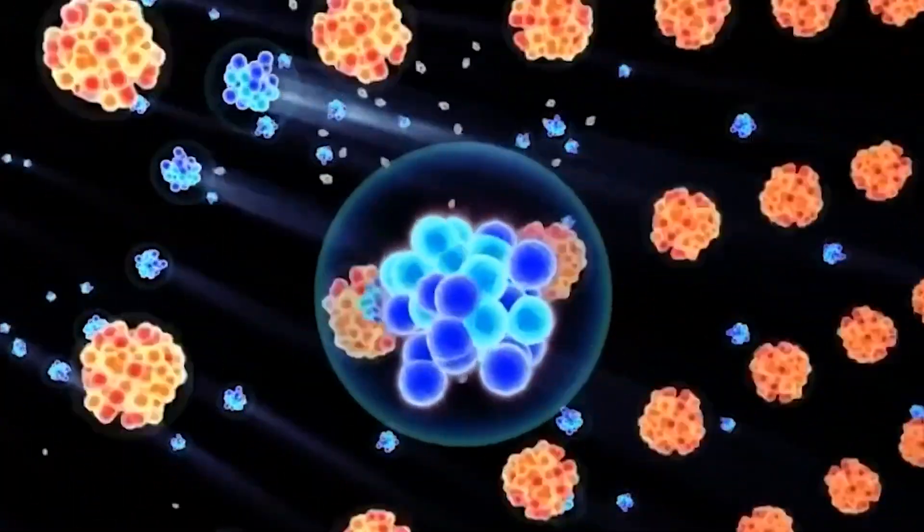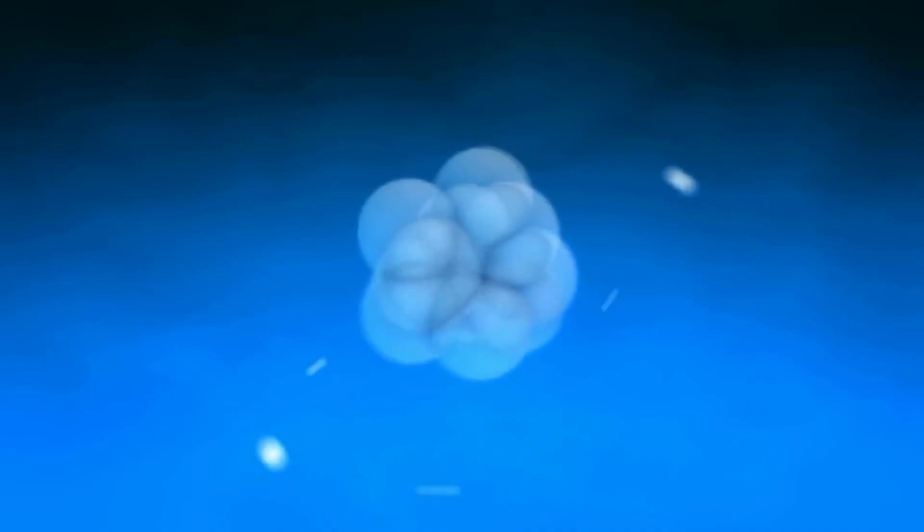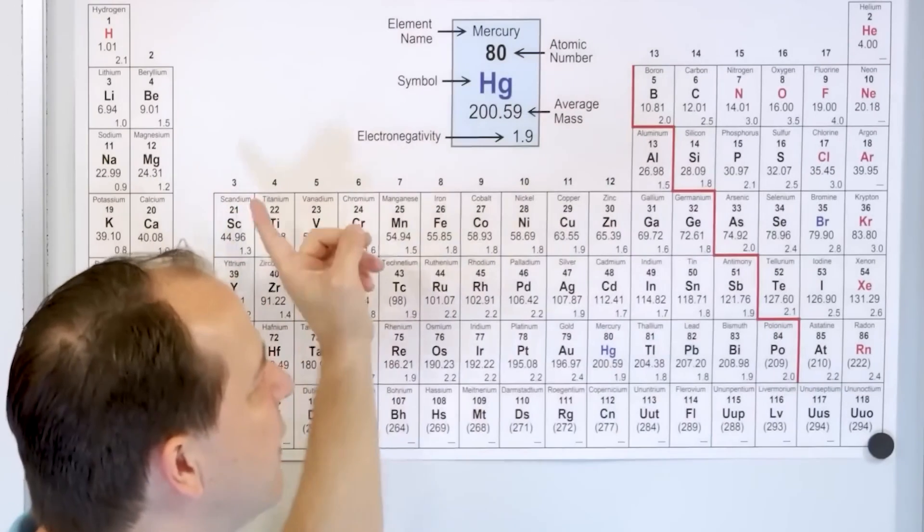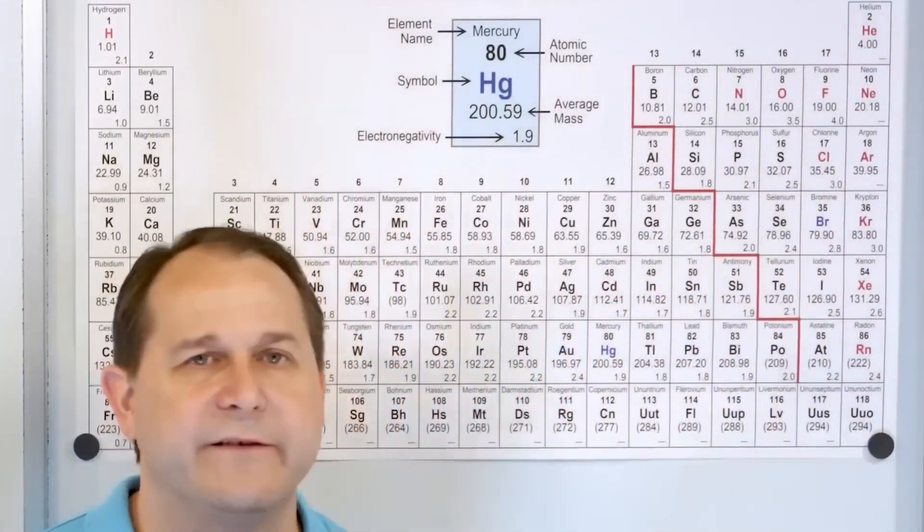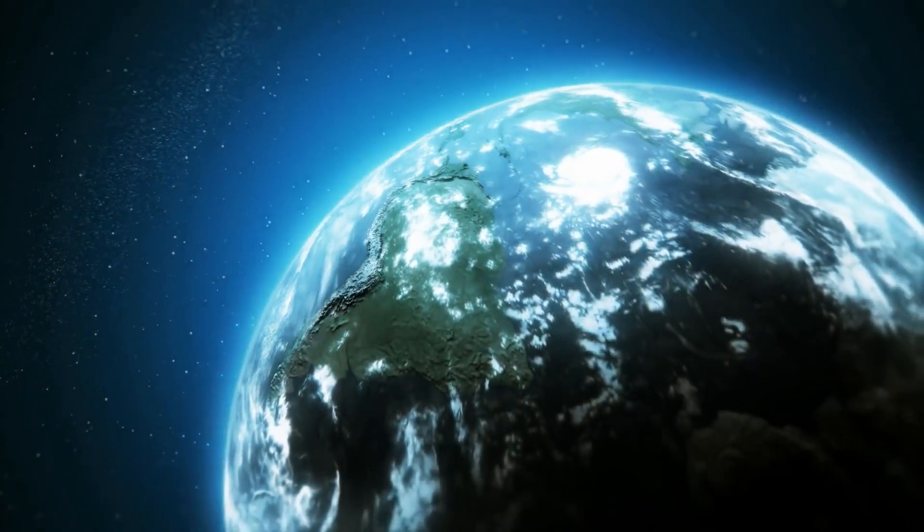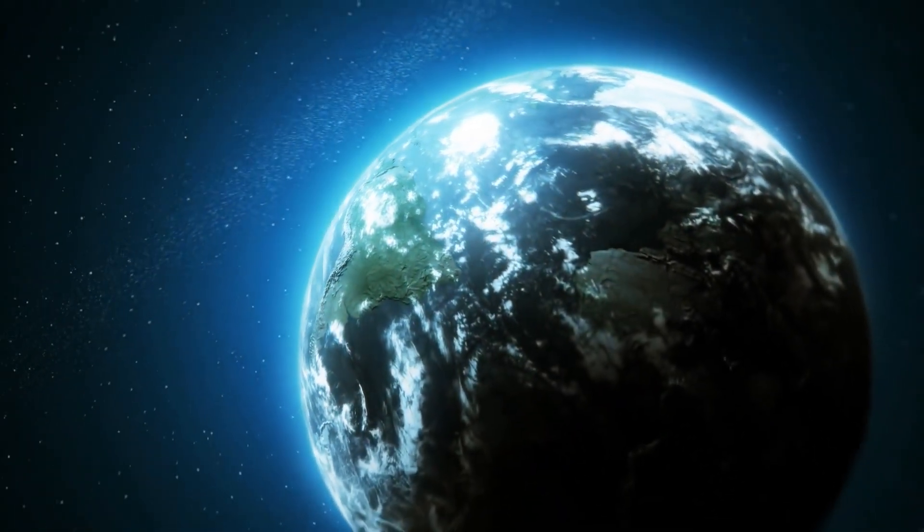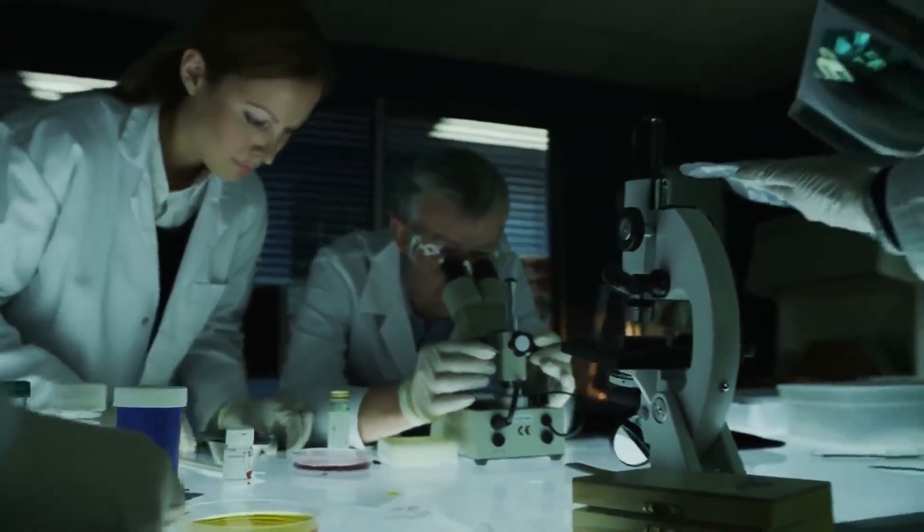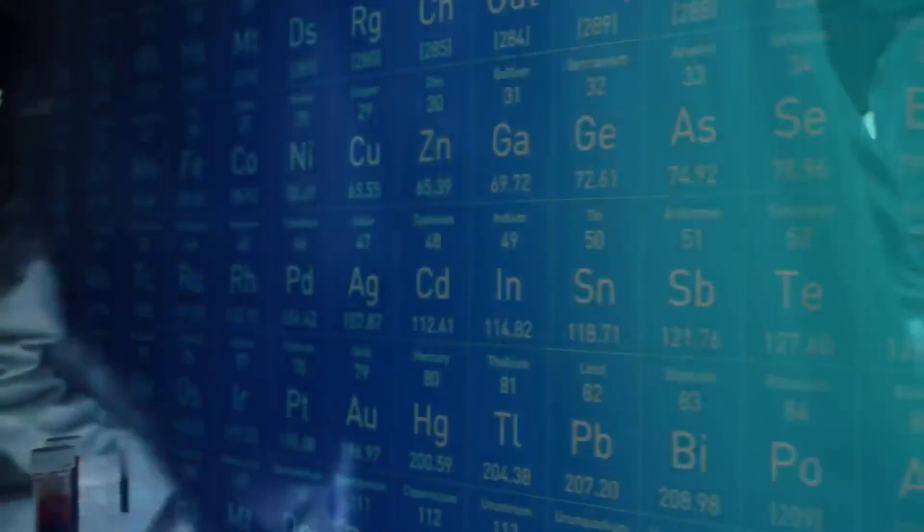John Dalton introduced the idea that elements are composed of tiny, indivisible particles called atoms. Each element possesses its own distinctive type of atom, and these atoms combine in various ways to create the substances that surround us. As more elements were identified, scientists became intrigued by their relationships and similarities. How many elements were there? Was this going to continue forever?